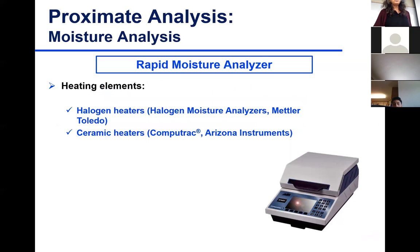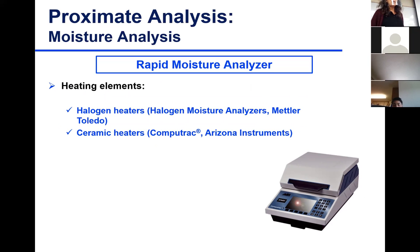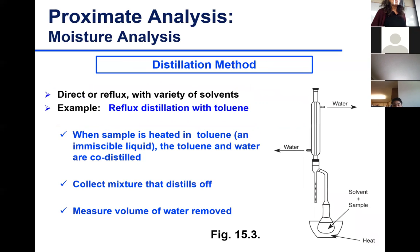There is also the rapid moisture analyzer, based on halogen heating. You heat the sample and get evaporation of water very quickly, then measure the difference in weight to get an approximation of moisture content.